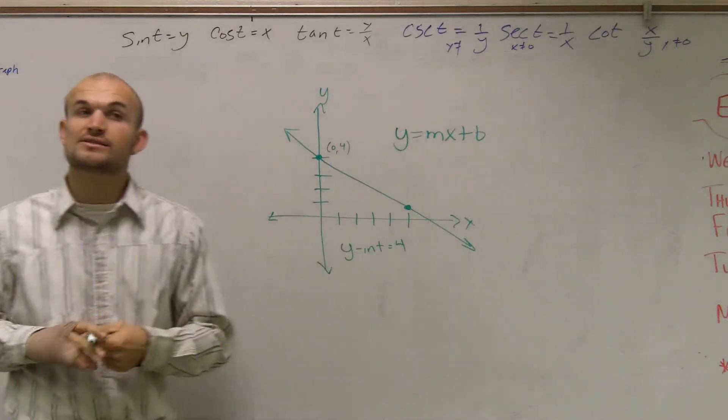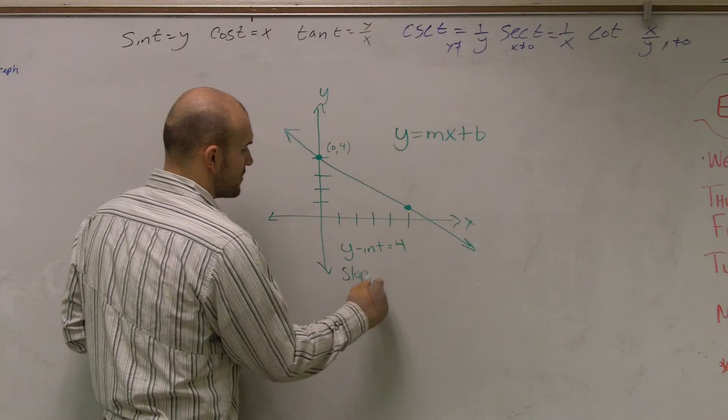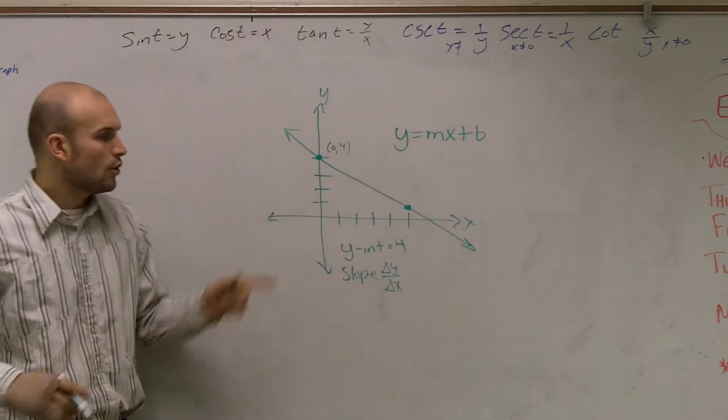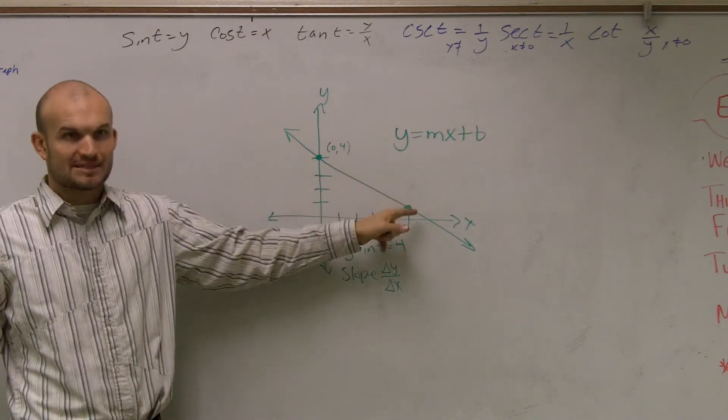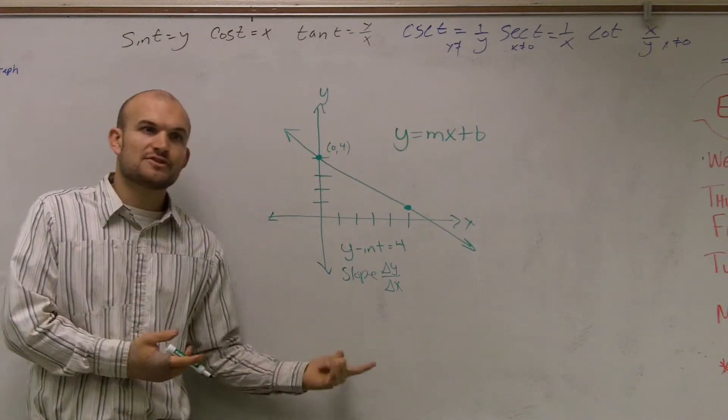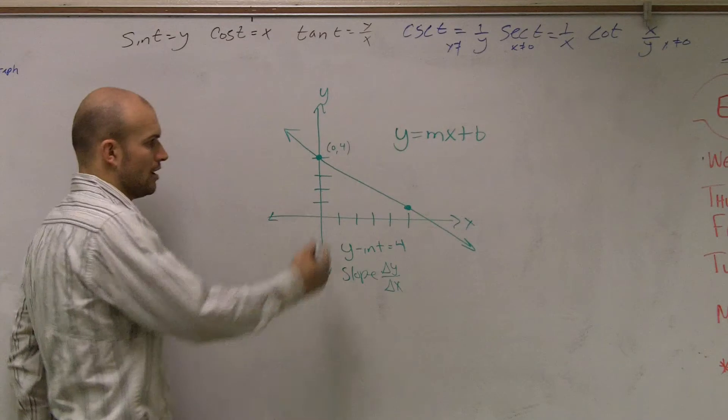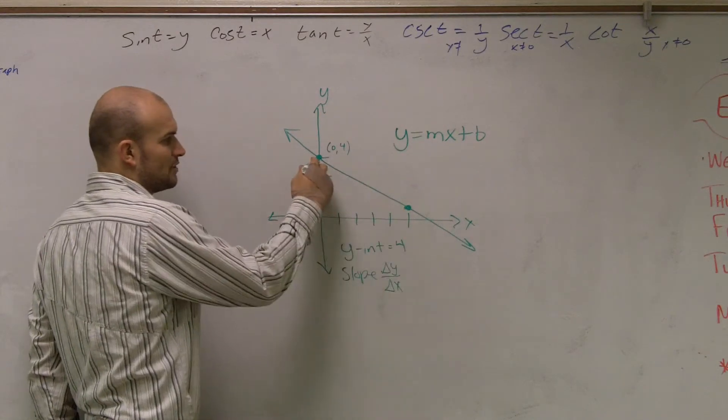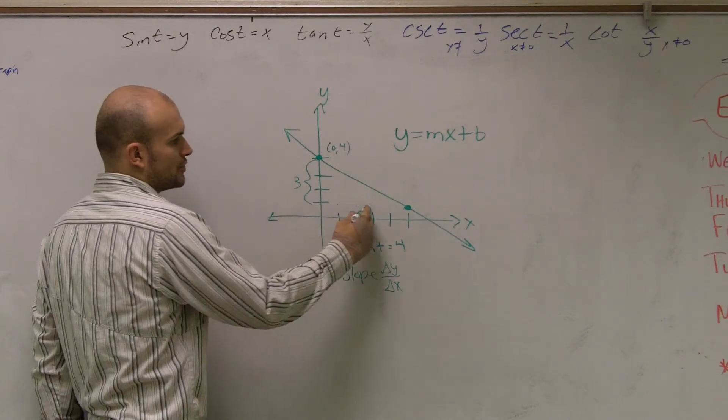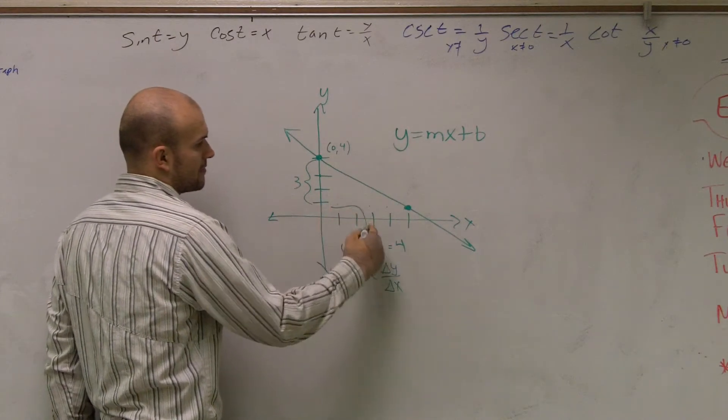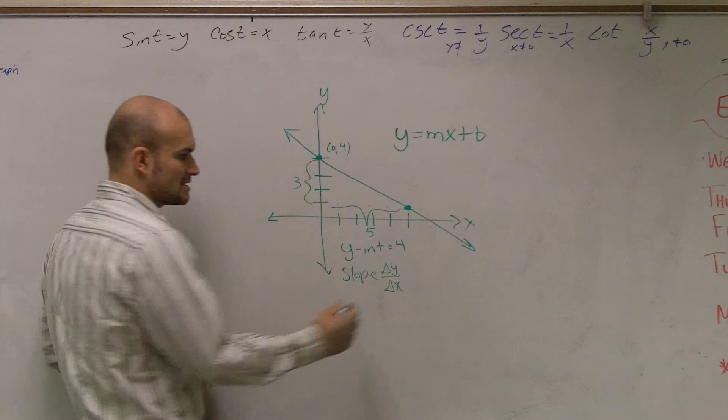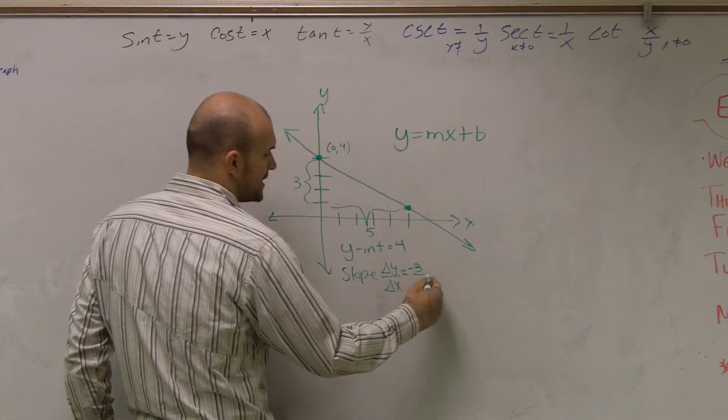Then the next thing is to find the slope. Now remember, the slope is what we determined was the change in y over the change in x. Meaning, what do I have to do to go from one point to the next point? Now there's multiple different ways you could do this. When you're given a graph and you're given two points, it's pretty easy just to say, to go from this point to this point, I have to go down 1, 2, 3, and I have to go over 1, 2, 3, 4, 5. So since I went down, I'm going to say my slope is negative 3 over 5.